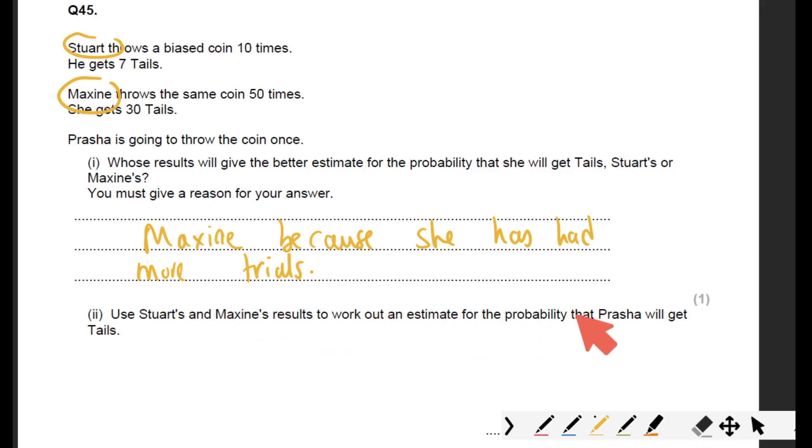Next question: use Stuart's and Maxine's results to work out an estimate for the probability that Prasha will get tails. We're using Stuart and Maxine's results. 30 plus 7, so it lands on tails 37 times out of how many experiments have they done all together, 60. 37 over 60 is your answer.